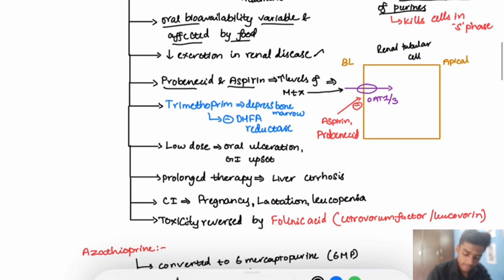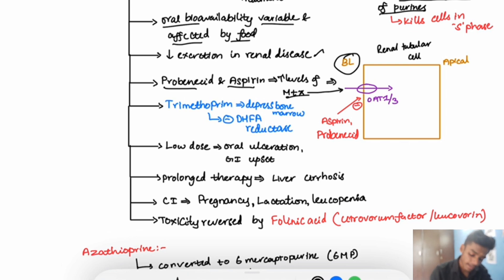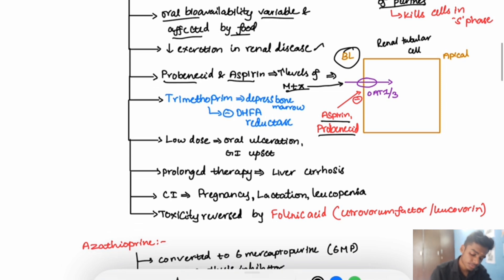In the basolateral membrane of the renal tubular cell, there is a transport protein — an organic anion transport protein (OAT) — which is responsible for the excretion of methotrexate. Aspirin and probenecid will inhibit this OAT, leading to increased levels of methotrexate.